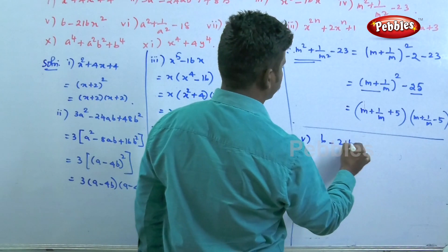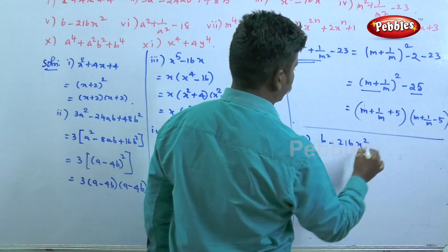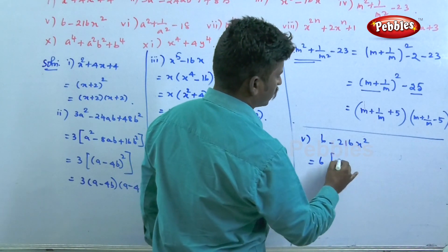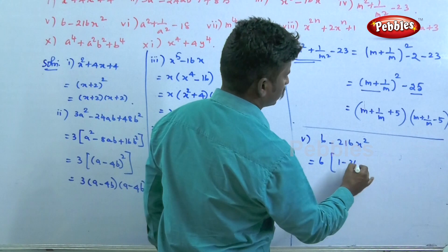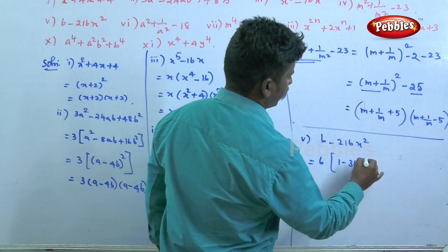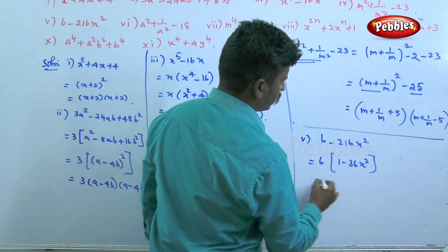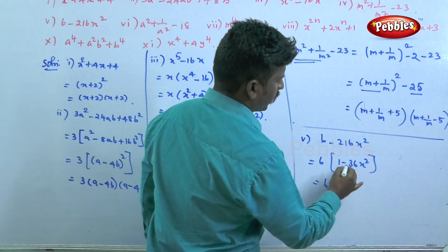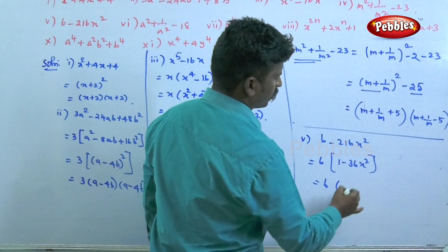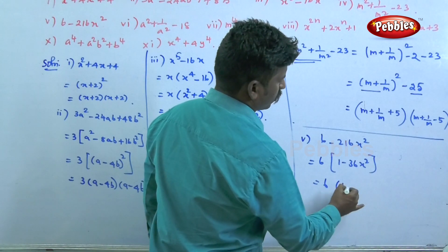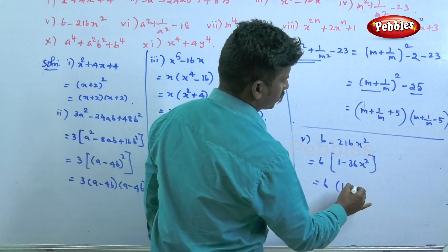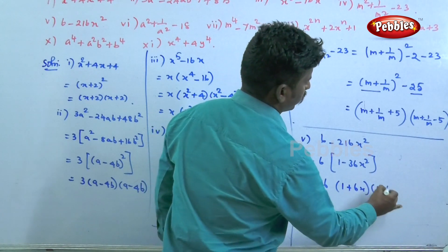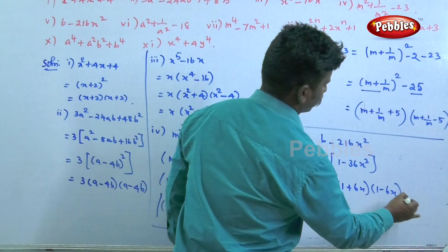The fifth question: 6 minus 216x squared, which equals 6 into 1 minus 36x squared. Using a squared minus b squared equals a plus b into a minus b, this gives 6 into 1 plus 6x into 1 minus 6x. This is the answer for the fifth question.